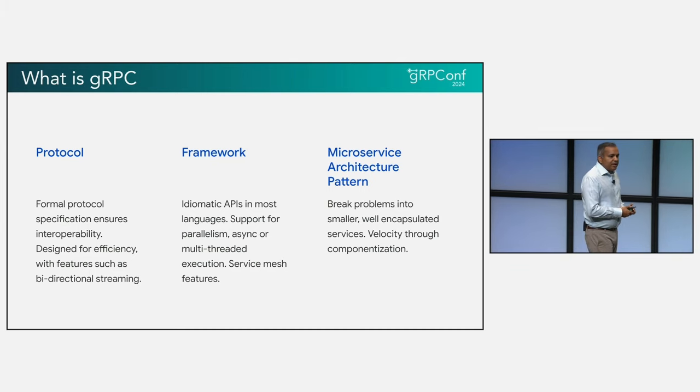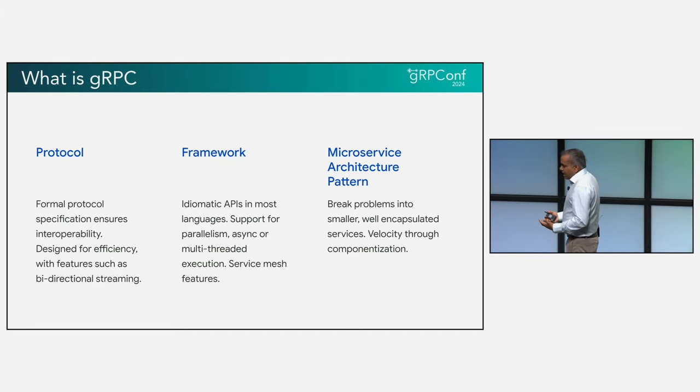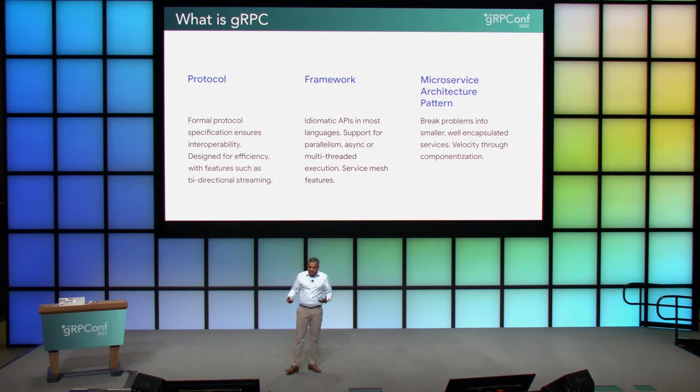The final perspective I'd share is gRPC also provides or enables an architectural pattern — that of microservices. Microservices allow teams to break down problems into well-encapsulated small services, which talk to each other to together solve a bigger problem. This enables better developer velocity across larger organizations. We see this become really relevant once your org size starts exceeding 30 to 50 software developers — that's where the benefits of breaking down monoliths into smaller services really start kicking in, and gRPC enables smaller teams to move in parallel at high velocity.